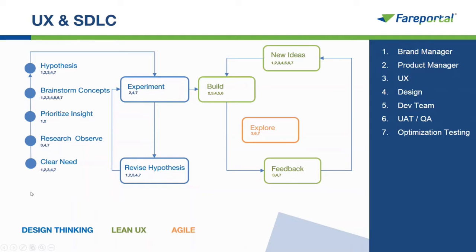We have different roles within the organization — brand manager, product manager, UX and design, development team, QA, and optimization testing. At each stage we have total collaboration and work together with all team members to create great software and user experience. The first step is clear need, research and observe, where we utilize UX the most. Then we prioritize insights, brainstorm concepts, and form hypotheses. Moving on to experiment, where we do AB testing experiments or user testing, and based on learnings we revise hypotheses and continue building the actual product.